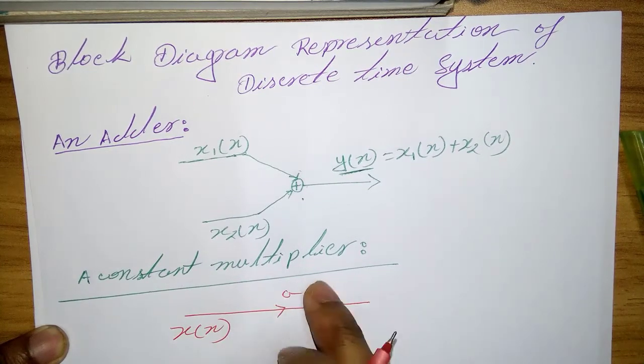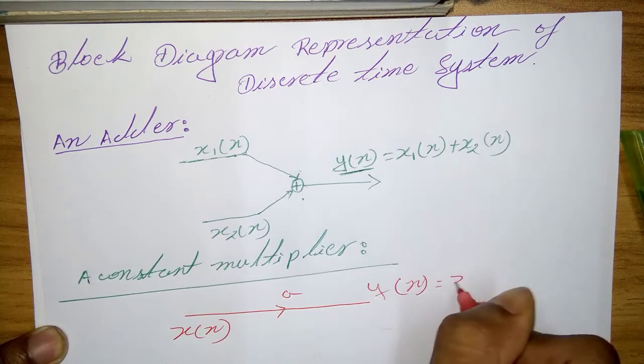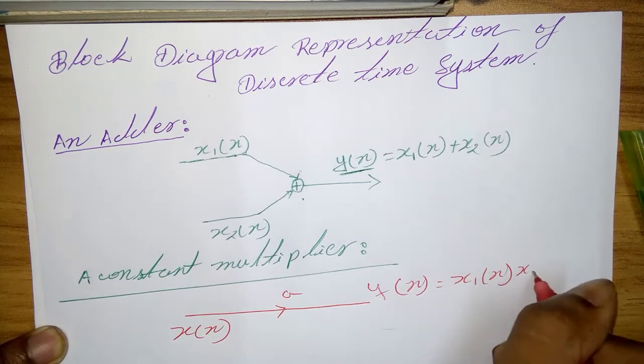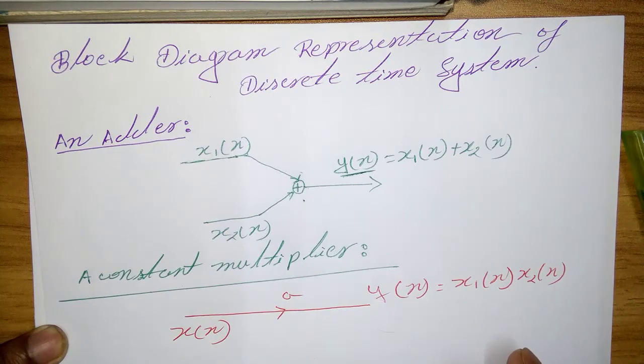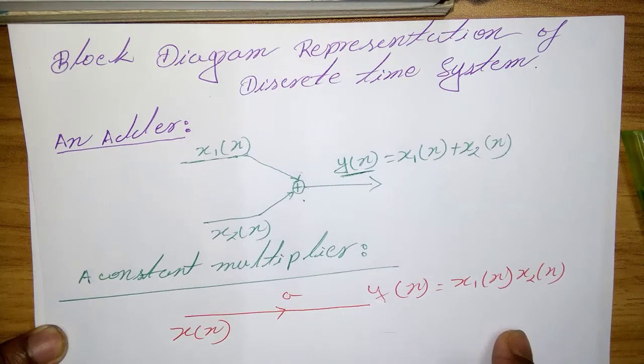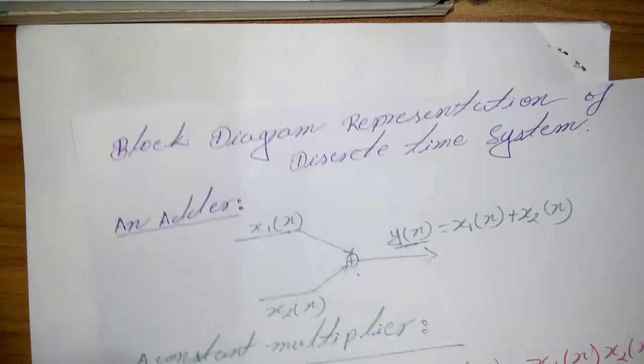The graphical representation for this operation: the input is x(n), modified with a scale factor a, and the output is y(n) = a × x(n). Note that this operation is also memoryless. Next one is a signal multiplier.